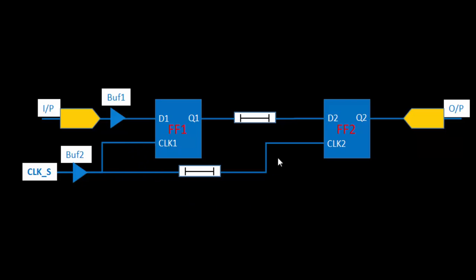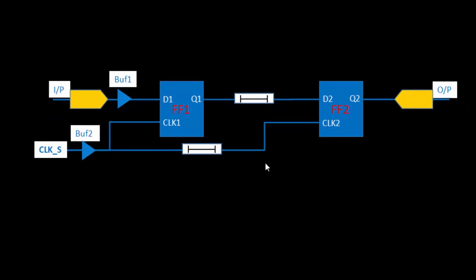Skew is basically a type of constraint which we apply on the clock path, and the data path has a lot of dependency on this constraint. Let's see how the delay of the data path depends on the clock skew, and that will help you understand the importance of skew.